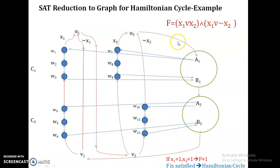So f = 1 AND 1 = 1. If and only if f is satisfied, there will be a Hamiltonian cycle in the graph. Therefore we can say the Hamiltonian cycle problem is NP-complete. Thank you.